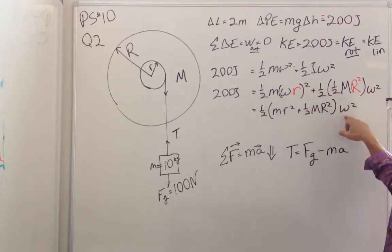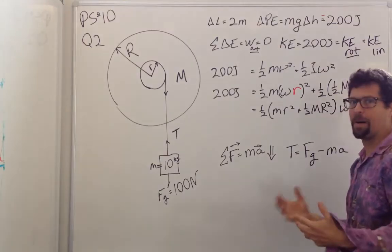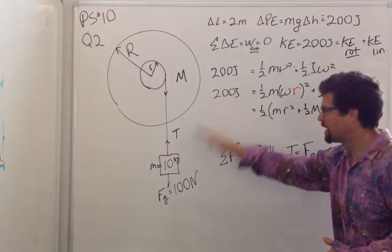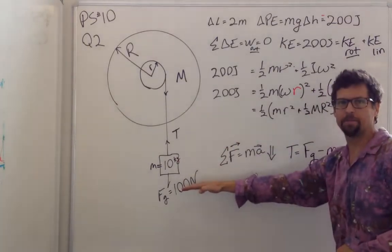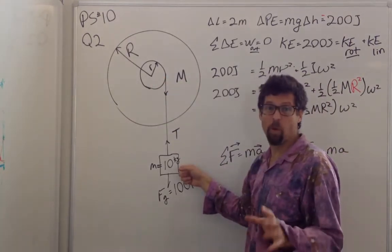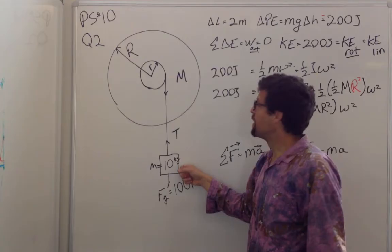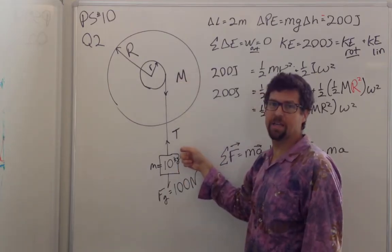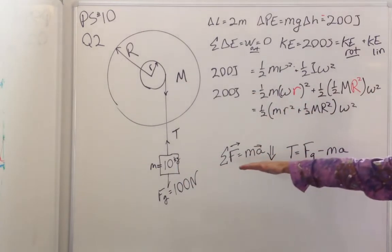I chose to solve for omega and wound up with an omega of about 41 per second by the time this reaches the bottom. Because this is 10 centimeters, we know the final speed is about 4 meters per second. The average speed is 2 meters per second, so it takes about a second to get to the bottom.